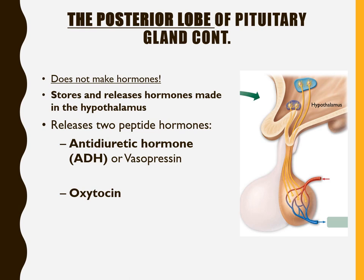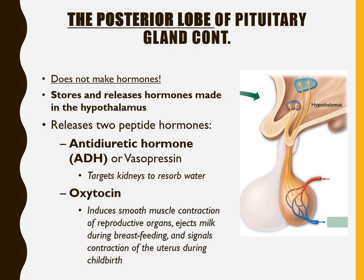Two peptide hormones are stored and released by the posterior pituitary. The first is antidiuretic hormone, or ADH, also called vasopressin. Think of anti-diuretic as the opposite of a diuretic like caffeine — instead of making you urinate, ADH makes the kidneys resorb water so you retain it in your bloodstream.